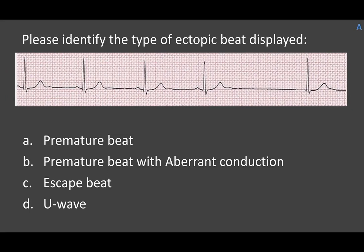Review question: identify the type of ectopic beat displayed. Looking at the strip, there's a big gap and then the heart rhythm picks back up. This beat has P waves in front of it, but the escape beat does not. This is not a case where the rhythm stopped and picked back up — we're looking at a late beat of a different type altogether because it doesn't even have a P wave. This is likely a junctional beat — a junctional escape beat to be specific.